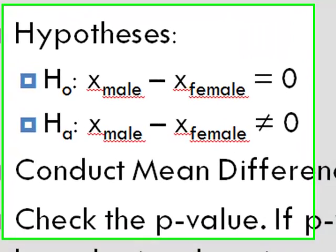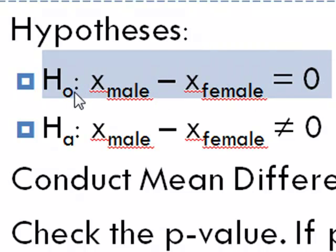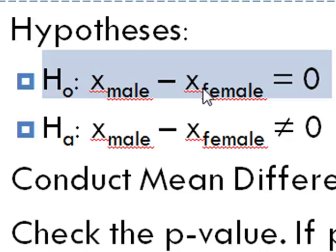In this case, the teaching evaluation difference is based on male and female. We construct the null hypothesis, designated as H0, where x̄ stands for the average teaching evaluation. So the average teaching evaluation for males — x̄ subscript male — minus the teaching evaluation for females is our mean difference. Our null hypothesis is that this difference equals zero, meaning both males and females are receiving equal teaching evaluations.